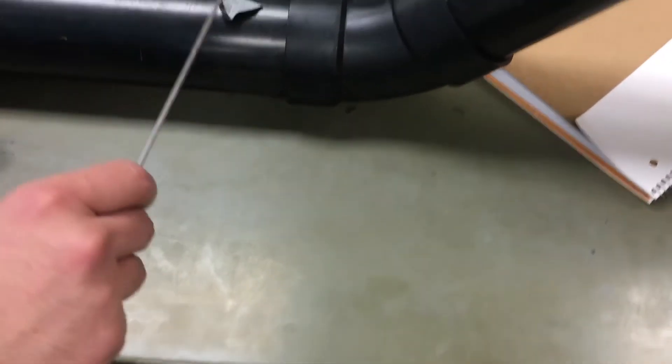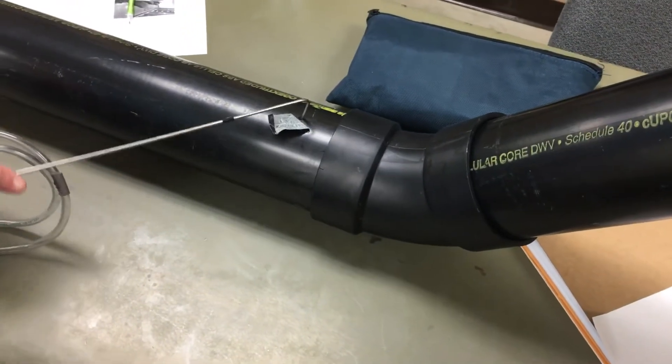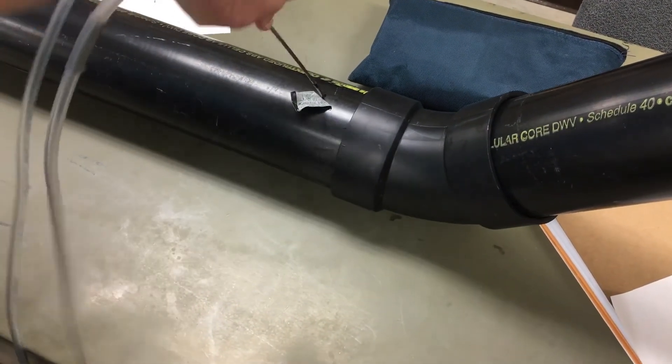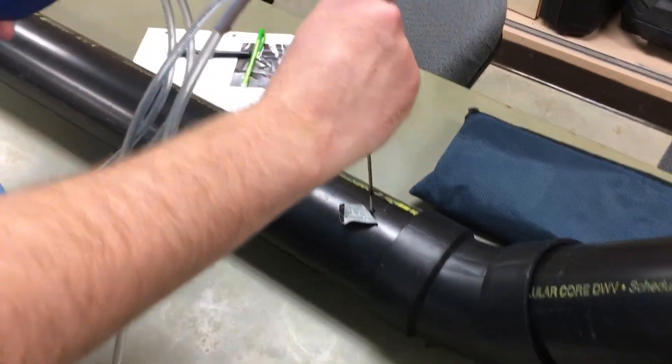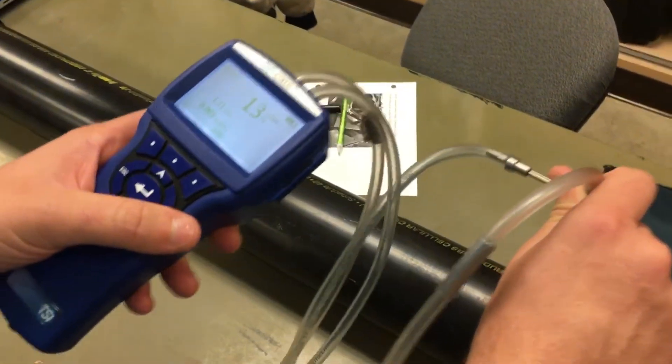We're going to insert our pitot tube into the duct with the inlet facing into the airflow. Turn on the fan.